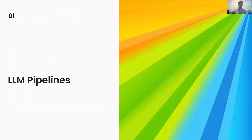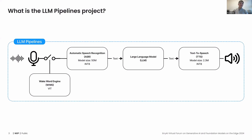What is LLM Pipelines? LLM Pipelines is a project of a whole LLM orchestration into an end-to-end solution. We start with a wake word engine that will detect commands such as 'NXP' and will trigger automatic speech recognition. The ASR will translate the user's speech into text and pass it to the large language model, which will provide an answer to the user query. Then we pass the text to text-to-speech, which pronounces it to the user.